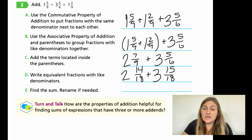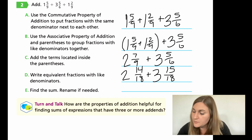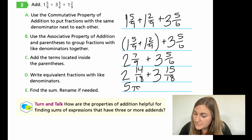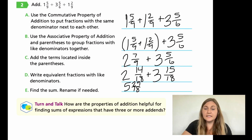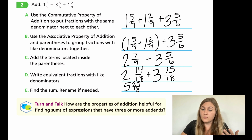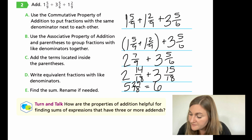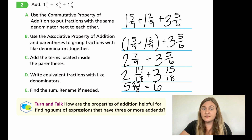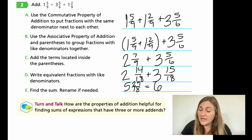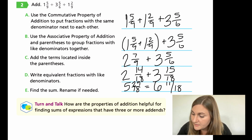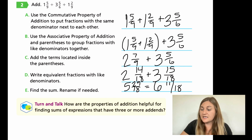Now I find the sum. The whole numbers: two plus three equals five. The numerators: 14 plus 15 is 29, with a denominator of 18. Twenty-nine over 18 is an improper fraction, so we need to rename. Twenty-nine over 18 equals one whole remainder 11, so that one whole boosts my five to a six. Taking 18 away from 29 leaves 11. So five and twenty-nine eighteenths equals six and eleven-eighteenths.